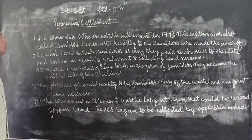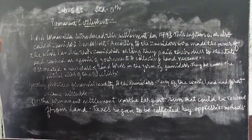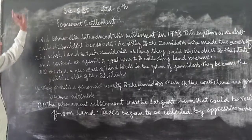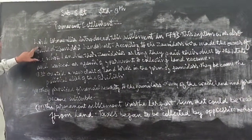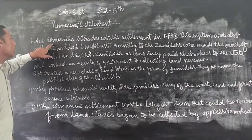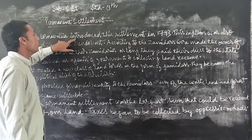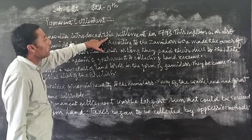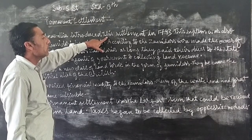Today we will talk about the Permanent Settlement. Lord Cornwallis introduced this settlement in 1793.